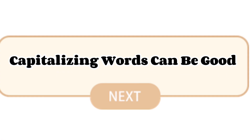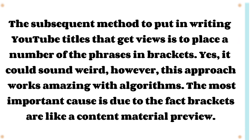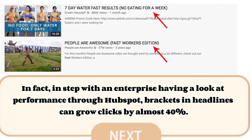Tip 8: Capitalizing Words. Using uppercase letters to start every word of your video title seems trivial but is actually important — it makes people think your video is better than competitors and draws more attention to your title. Tip 9: Start Using Brackets. Placing some words in brackets works amazingly with algorithms. Brackets act as a content preview, and according to a HubSpot study, brackets in headlines can grow clicks by almost 40%.